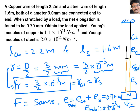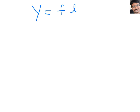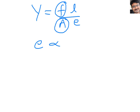They are asking us to find the load applied, which is nothing but force F. They also gave Young's modulus of copper and steel. The basic formula for Young's modulus is Y = FL/AE. Since both wires have the same radius, cross-sectional area is the same, and due to series combination, force applied is the same.